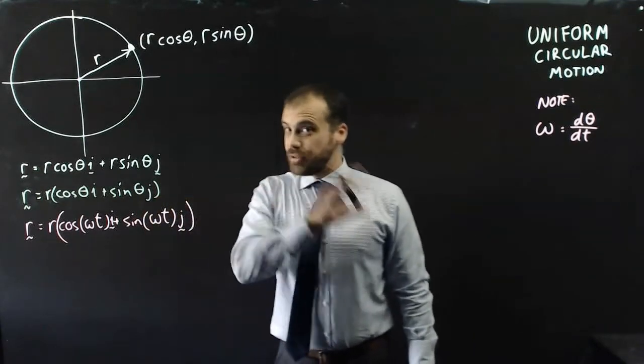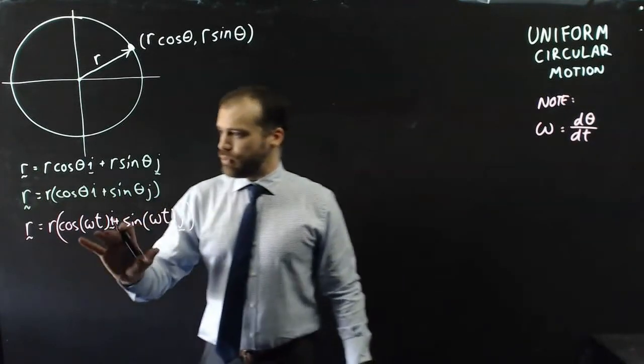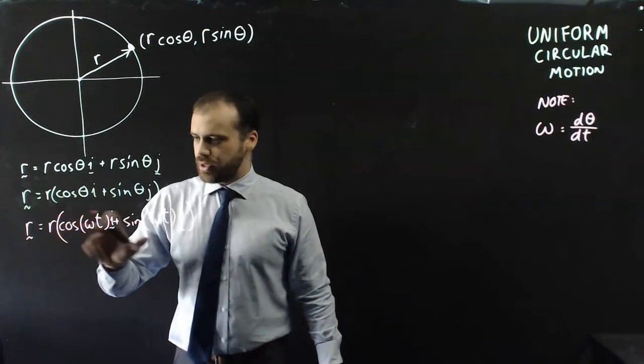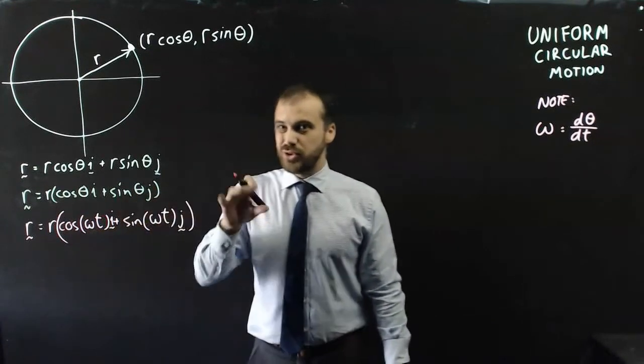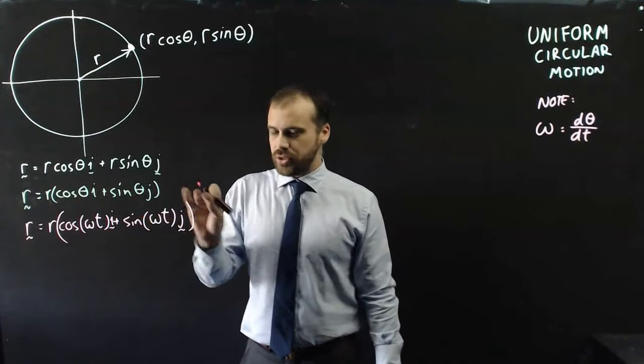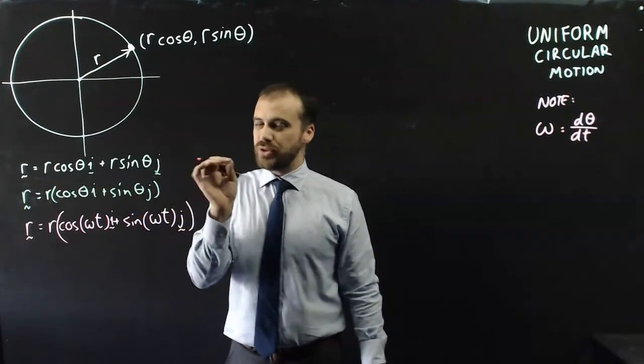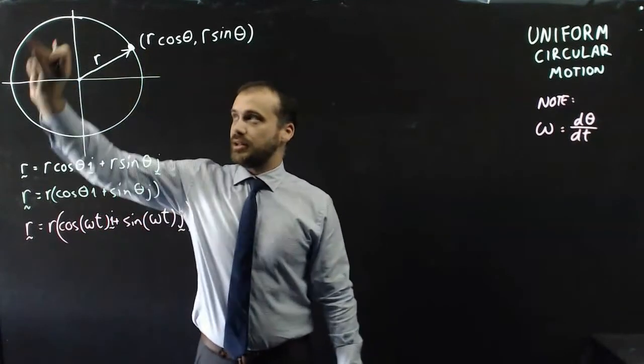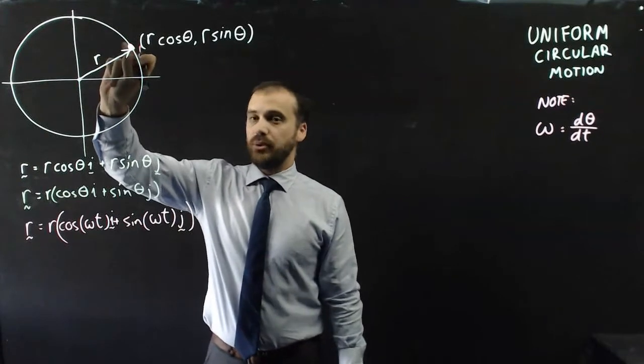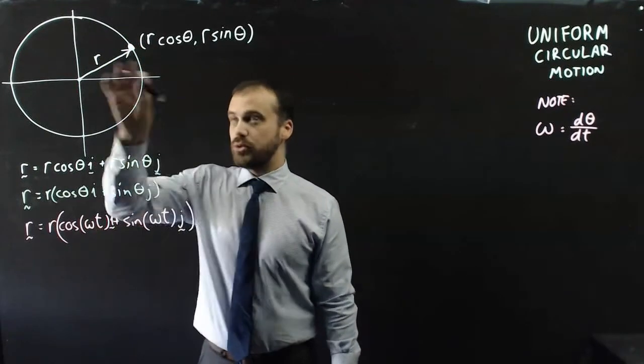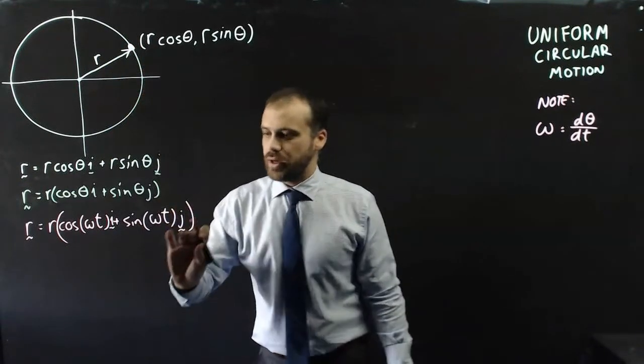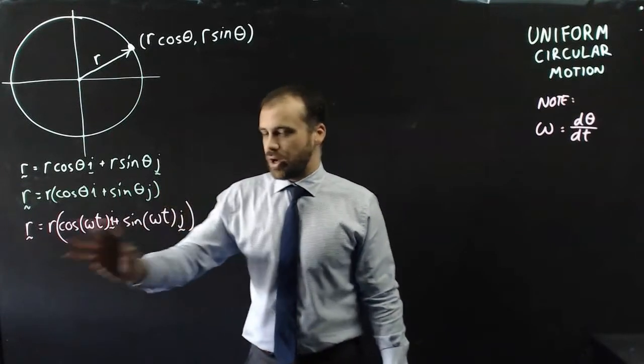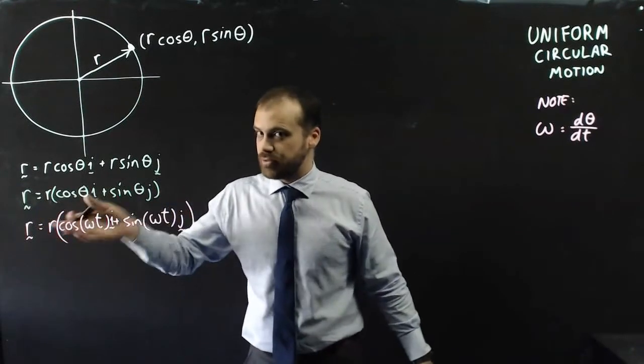This function that we have here is really useful because if we knew the value here and we knew the value here and you knew the time as well, you can just plug those values in and you can find where exactly around this circle our point is. We'll find out what our i coordinate is and we'll find out what our j coordinate is. Really useful displacement function.